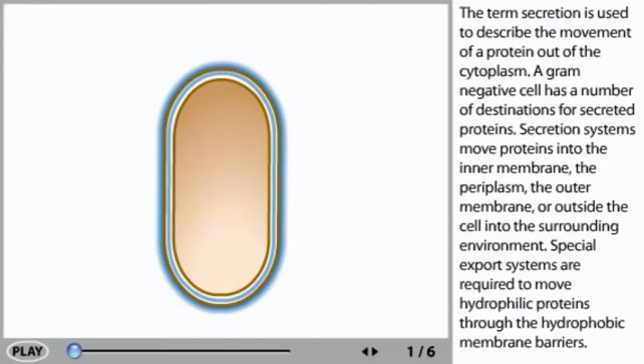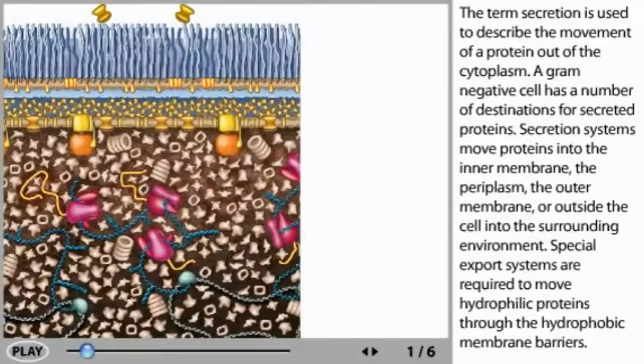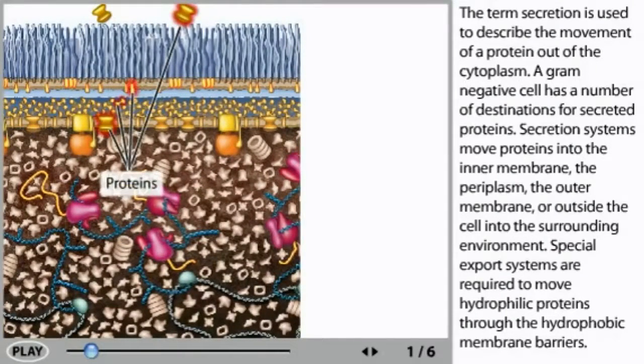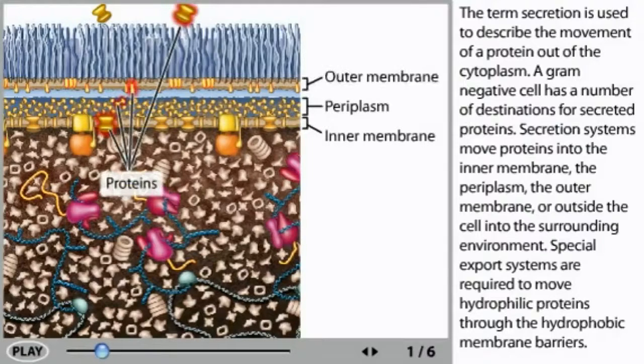The term secretion is used to describe the movement of a protein out of the cytoplasm. A gram-negative cell has a number of destinations for secreted proteins. Secretion systems move proteins into the inner membrane, the periplasm, the outer membrane, or outside the cell into the surrounding environment. Special export systems are required to move hydrophilic proteins through the hydrophobic membrane barriers.